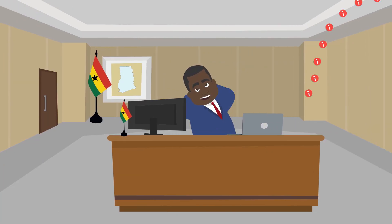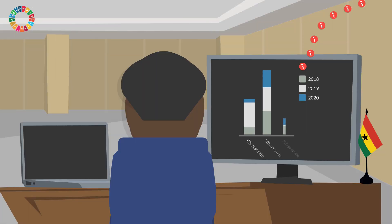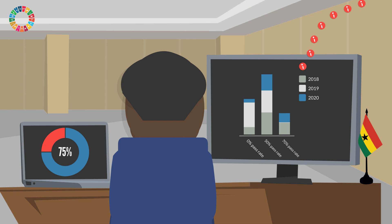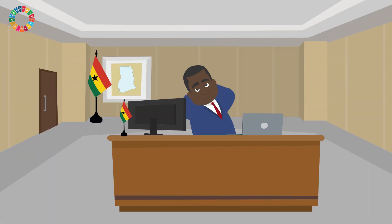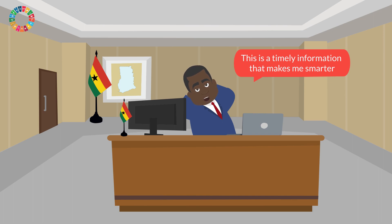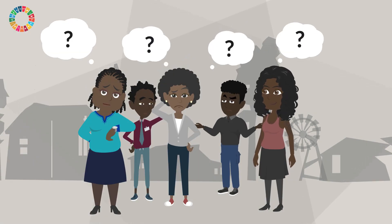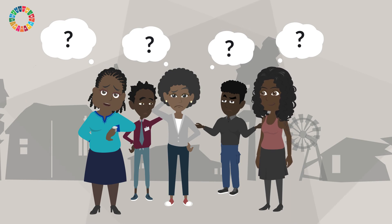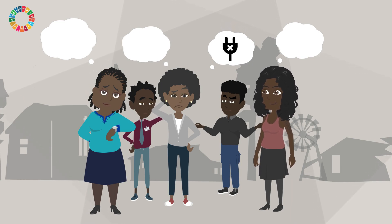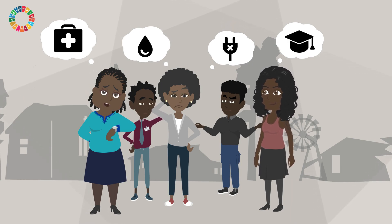With the DDDP, you can access all data from one easy-to-use platform. You can compare performance across districts and regions and check all key indicators and programs. This is timely information that makes me smarter. You don't need to spend all day searching for the number of people with access to electricity, water, or education.